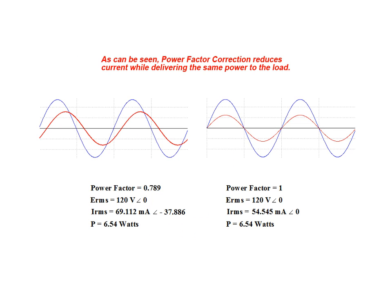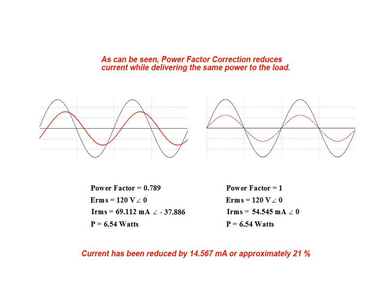As can be seen, power factor correction reduces current while delivering the same true power to the load. In this example, circuit current has been reduced by 14.567 milliamps, or approximately 21%.